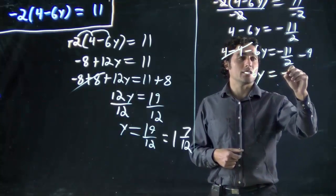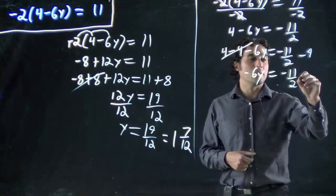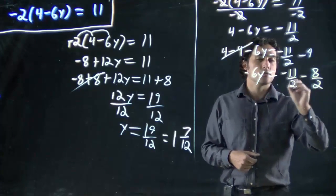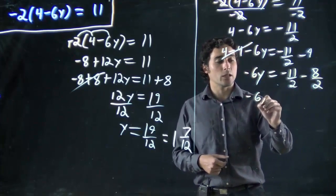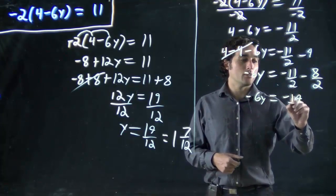And what we've got to do, put this as minus 11 over 2. If I want to put this as 2 on the bottom, it's the same as saying minus 8 over 2. Now, I can combine them. Minus 6y equals minus 19 over 2.